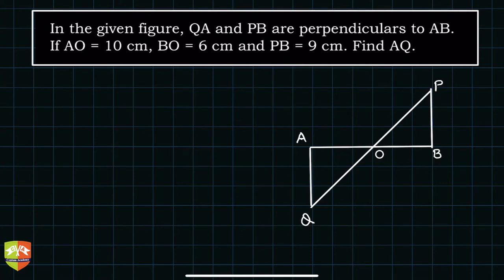So perpendicular means this is perpendicular, and AO is 10 cm. So this length here is 10, and BO is 6.